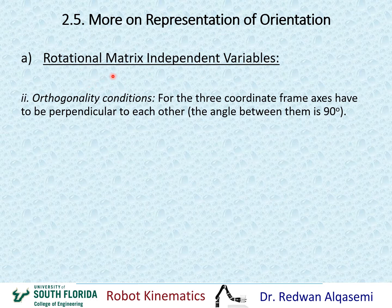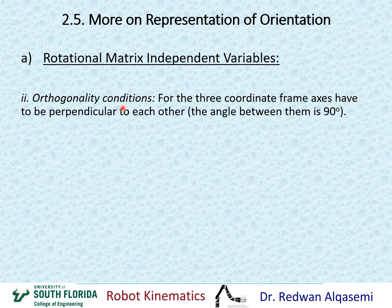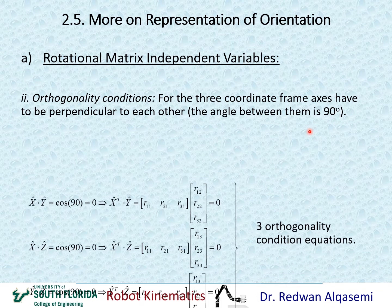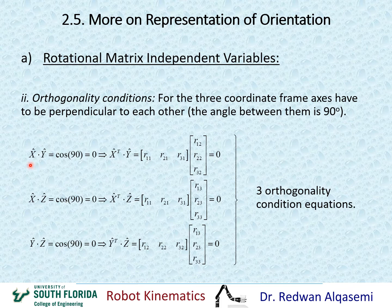We can also look at the rotation matrix from another condition: the orthogonality condition. This creates another three relationships, making a total of six relationships that relate the nine elements of a rotation matrix to the three independent variables and the six dependent variables. The orthogonality condition states that the three coordinate axes must be perpendicular to each other, meaning the angle between X, Y, and Z axes for any frame must be 90 degrees. This gives us another three equations: X dot Y equals zero.